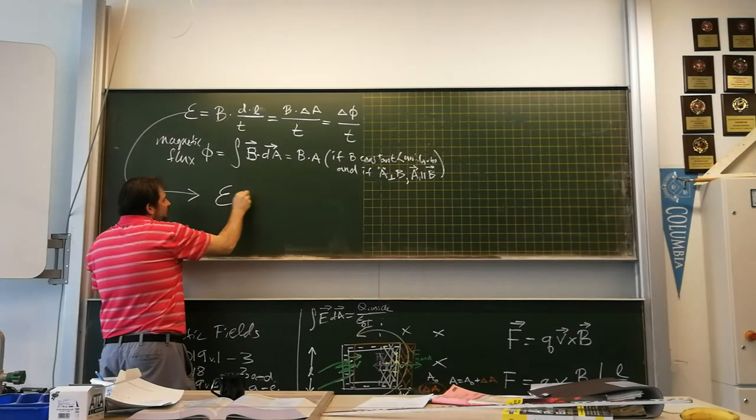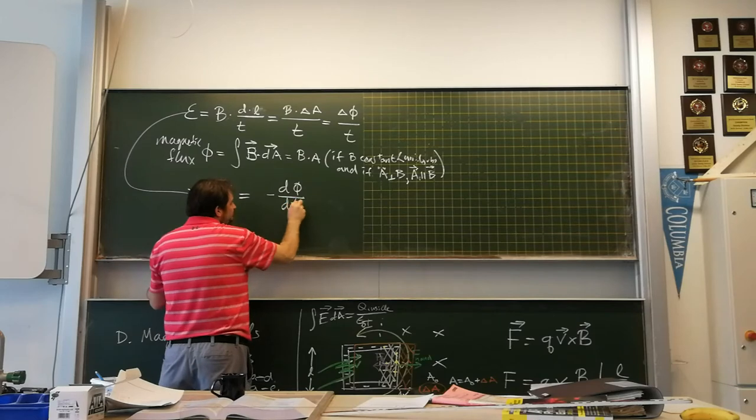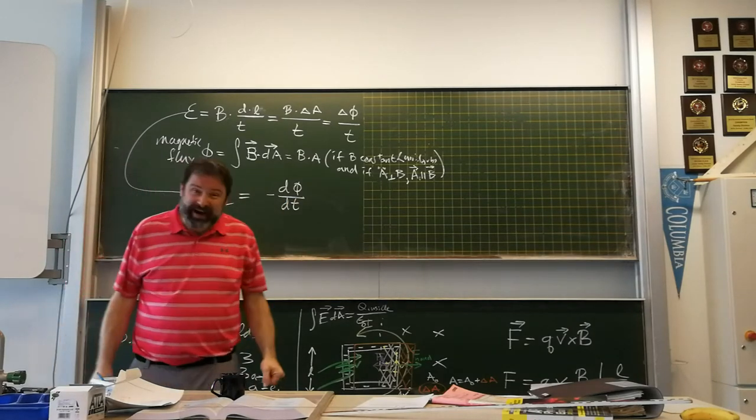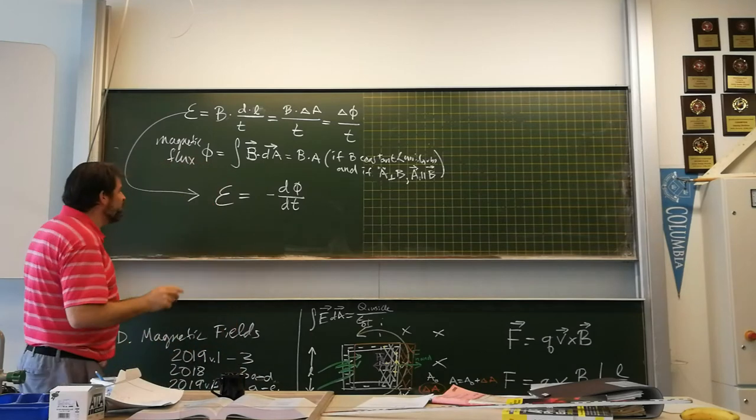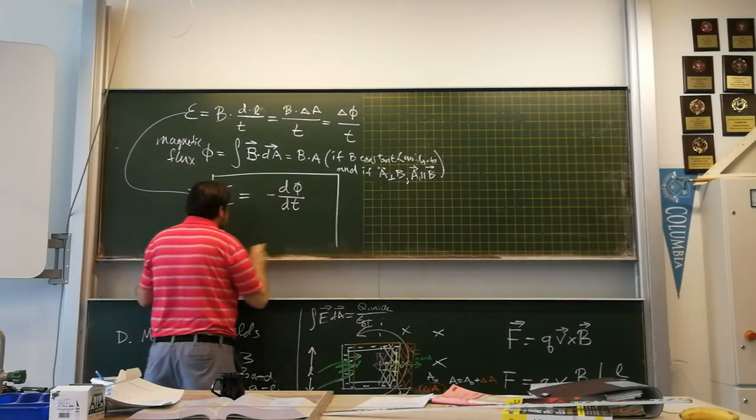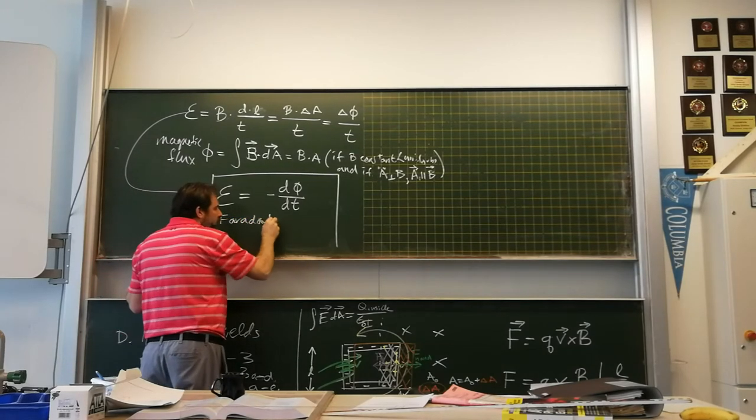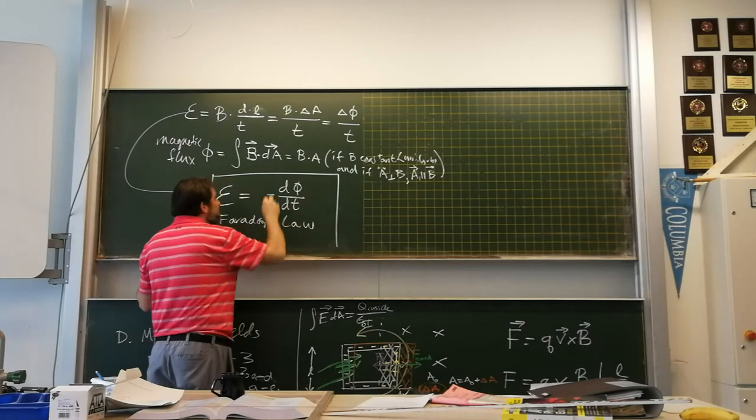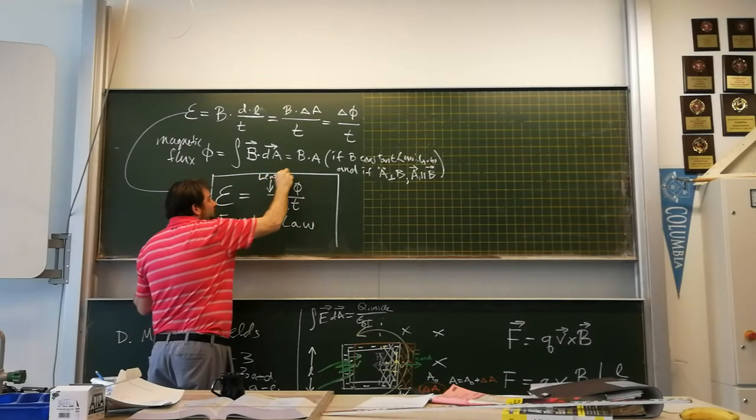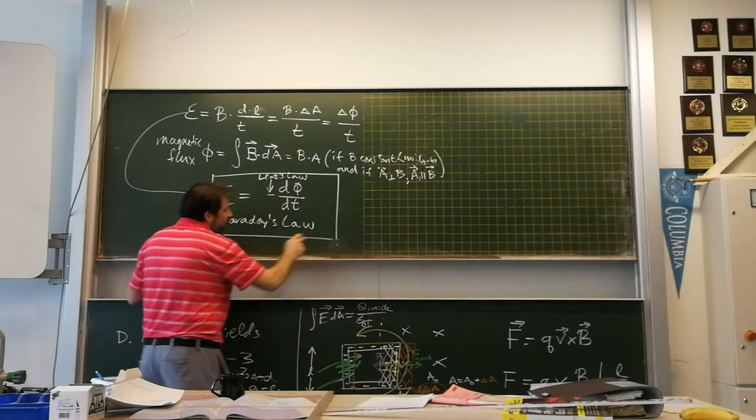So we're going to take that equation and generalize it. Into epsilon is equal to minus d phi dt. Oops, sorry. I'm throwing the minus sign already there. We do normally put a minus sign in there, and we'll get to that in just a sec. This thing is called Faraday's law. And this minus sign specifically refers to Lenz's law. And we'll get into what that means right now.